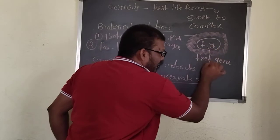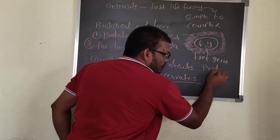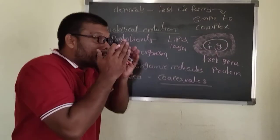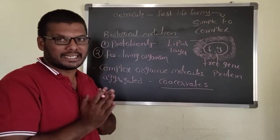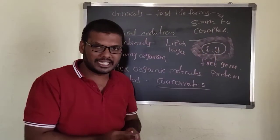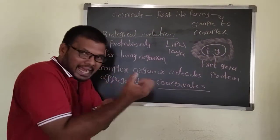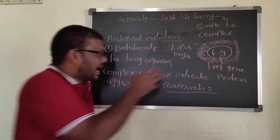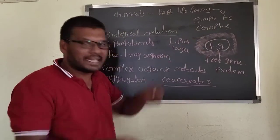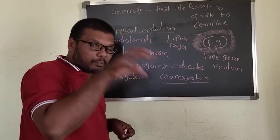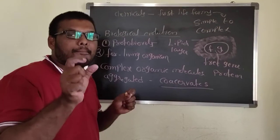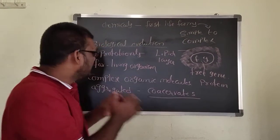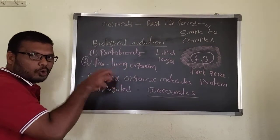Inside, they have a protein with enzyme. And also they have a multiplication function. Keep in mind: a free gene has an attractive nature which attracts the surrounding molecules; they form a lipid layer. Inside they have protein indicating an enzyme, and they have a multiplication function. After that, this will be called a protobiont.